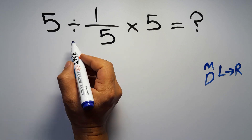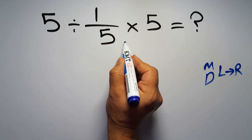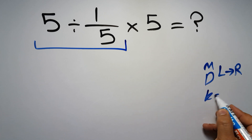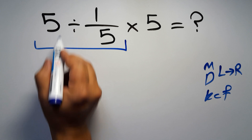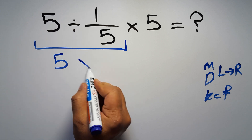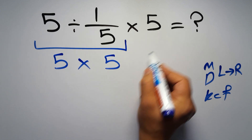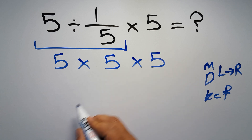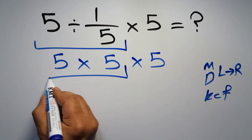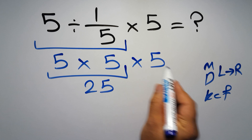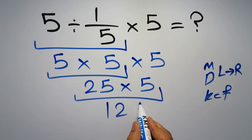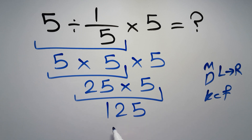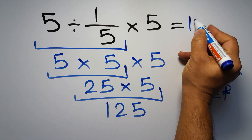So first we have to do this division: 5 divided by 1 over 5. According to the KCF rule — K stands for Keep, C stands for Change, and F stands for Flip — we keep the first fraction, change the division to multiplication, and flip the second fraction. Then 5 times 5 equals 25, and 25 times 5 gives us 125. This is our final answer. The correct answer is 125.